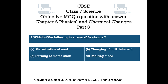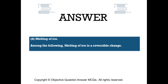Question number 3. Which of the following is an irreversible change? Option A germination of seed, Option B changing of milk into curd, Option C burning of matchstick, Option D melting of ice. The right answer is Option D — melting of ice. Among the following, melting of ice is an irreversible change.